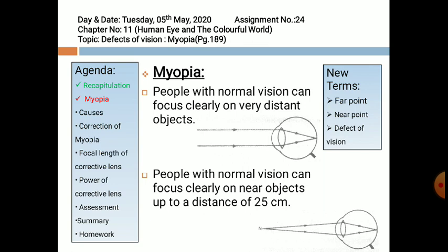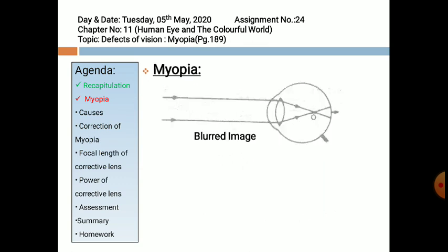People with normal vision can also focus clearly on nearby objects up to a distance of 25 cm from the eye. We say their near point distance is 25 cm. As you can see in the figure, at point N there is a nearby object; the rays coming from this object after striking the eye lens are again converging and meeting at the retina, and a sharp and clear image is formed. Now, what happens if the rays of light do not converge at the retina? Then a blurred image is formed. The parallel rays represent the object is very far away, and after passing the eye lens, the light rays are meeting in front of the retina rather than on the retina. So it is a defect of vision, and this defect of vision is known as myopia.